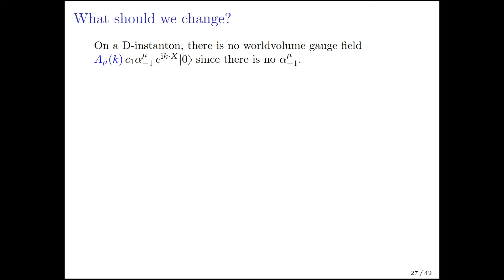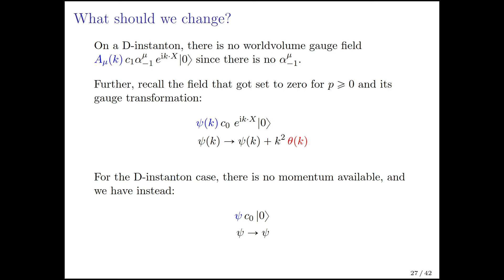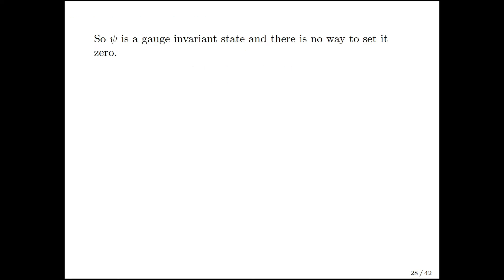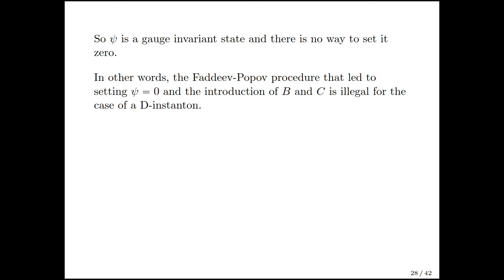What should we change? On a D-instanton worldvolume, there is no A mu because you don't have the mu index at all. Here is the psi of k from previously. It was multiplying c0 e^{ikx} and shifting by k squared times theta. But now there is no momentum, so psi just does not change under this gauge transformation. Psi is gauge invariant. Because psi is gauge invariant, you cannot set it to 0 like we did before. In other words, this Faddeev-Popov procedure that led to setting psi equal to 0 and the introduction of capital B and capital C is just illegal for the case of a D-instanton.